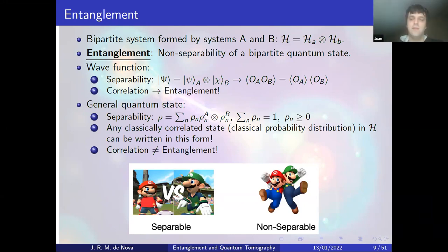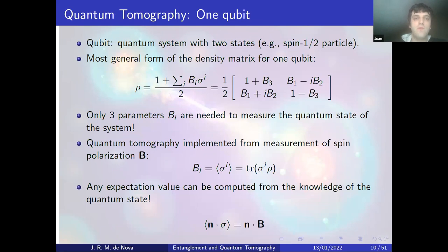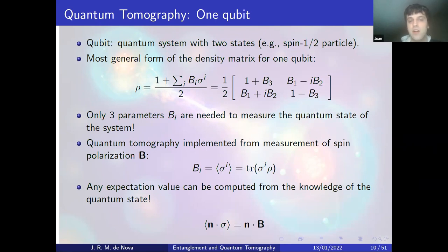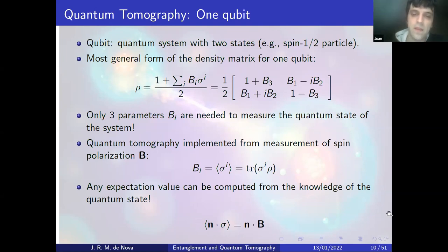Quantum tomography for one qubit is simple. A qubit — the simplest quantum system with two states, such as a spin-1/2 particle — has a density matrix that takes the form (I + v·σ)/2 in terms of Pauli matrices, requiring three parameters. These parameters are determined by measuring the spin polarization vector v. Once we know v, we can determine the spin polarization in any direction.